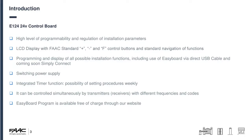The E124 control board has a high level of programmability and regulation of all installation parameters available. We use the same LCD display with the plus/minus net control board as you're normally used to. For programming and display of all possible functions you can use EasyBoard via direct USB cable, and coming soon you'll be able to plug the Simply Connect modules straight onto the board — a firmware upgrade will be required.